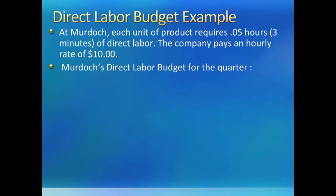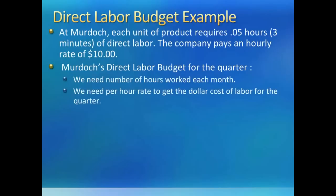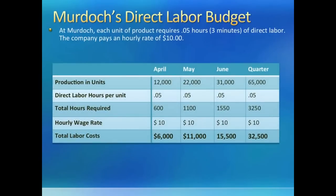Murdoch takes 0.05 hours to make each unit and pays $10 an hour to all its employees. We will be paying workers by the hour, so we should multiply units to be produced by the hour fraction of 0.05 hours and not by 3 minutes, because then you would have to convert minutes back into hours. We get the hours to be worked each month, multiplied by the rate, and we are done.